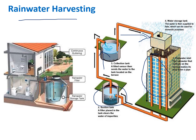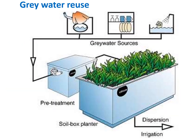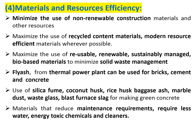Gray water is water that is generally less polluted, coming from dishwashing, bathroom areas, or kitchen sinks — comparatively less polluted than water from toilet blocks. If collected separately and given nominal treatment, it can be utilized for gardening purposes. This is an example of gray water reuse.